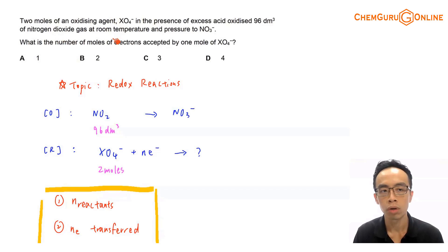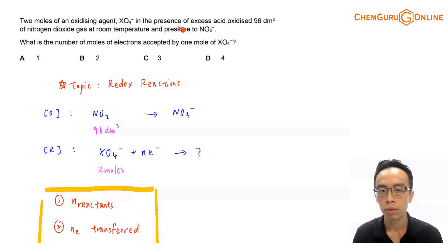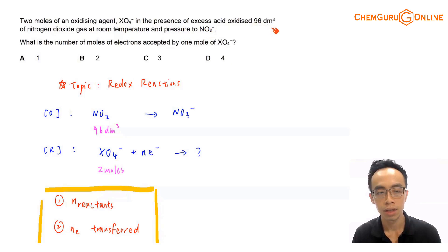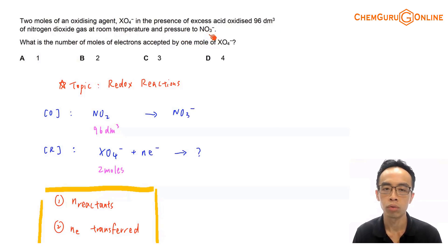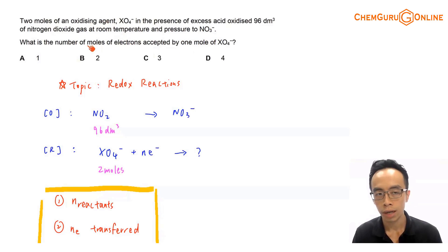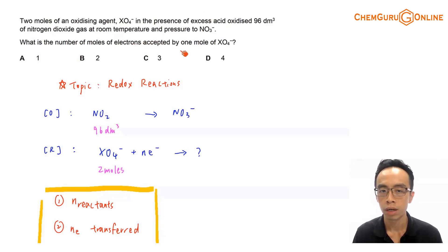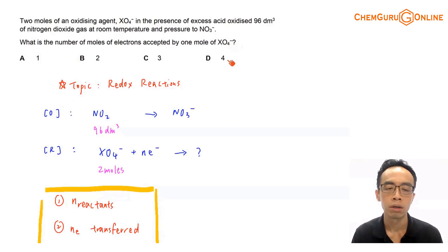I have 2 moles of an oxidizing agent, XO4⁻ in the presence of excess acid, oxidizes 96 dm³ of nitrogen dioxide gas at room temperature and pressure to NO3⁻. The question is asking for the number of moles of electrons accepted by 1 mole of XO4⁻.